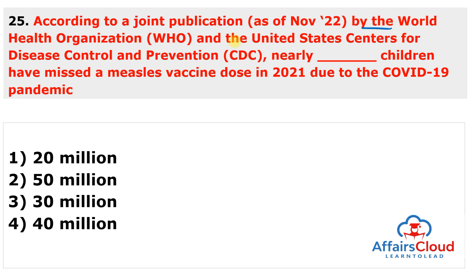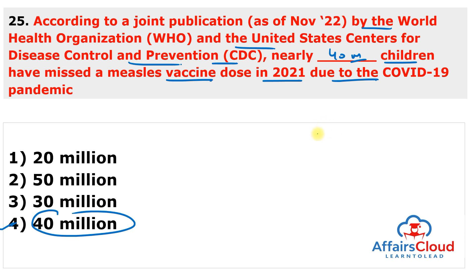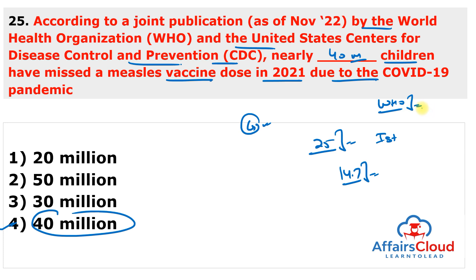Next question: According to a joint publication by the World Health Organization and the US Centers for Disease Control and Prevention, nearly 40 million children missed a measles vaccine dose in 2021 due to the COVID-19 pandemic — around 25 million missed their first dose and 14.7 million missed their second dose. This decline in measles vaccination represents a major setback in global progress to eliminate measles.